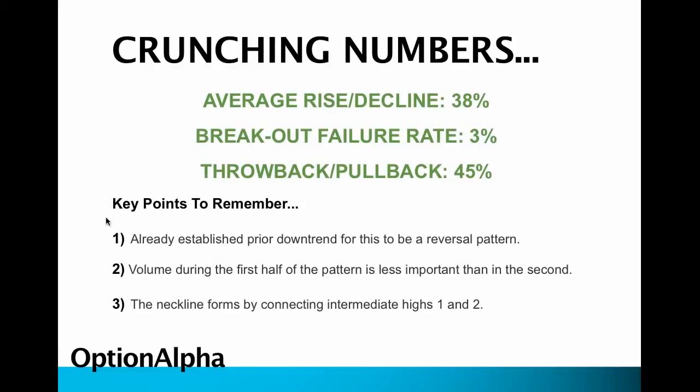Some keys to remember with this pattern: you need an already established prior downtrend for this to be a relevant reversal pattern. This is not going to happen after a one-month downtrend — it needs to be a long, sustained downtrend. Volume during the first half of the pattern is less important than the second half. If volume starts to really increase as the head and second shoulder are forming, that's more substantial and meaningful — it means a bigger breakout is likely to happen.